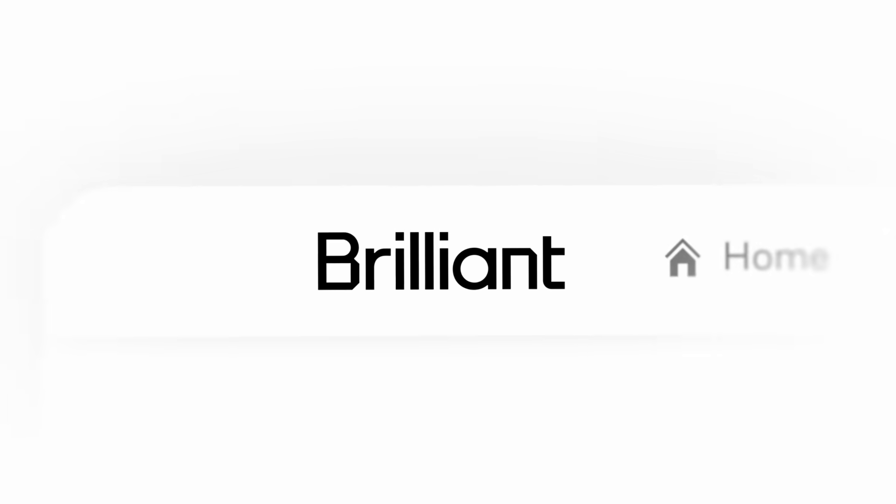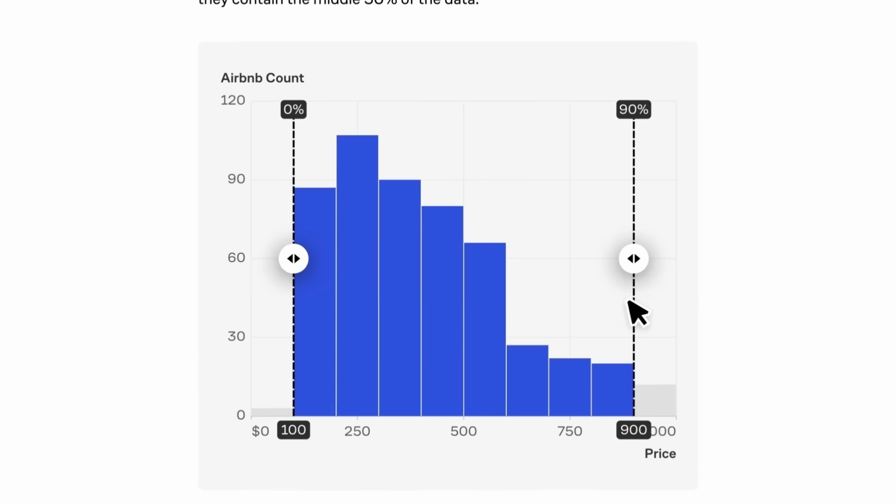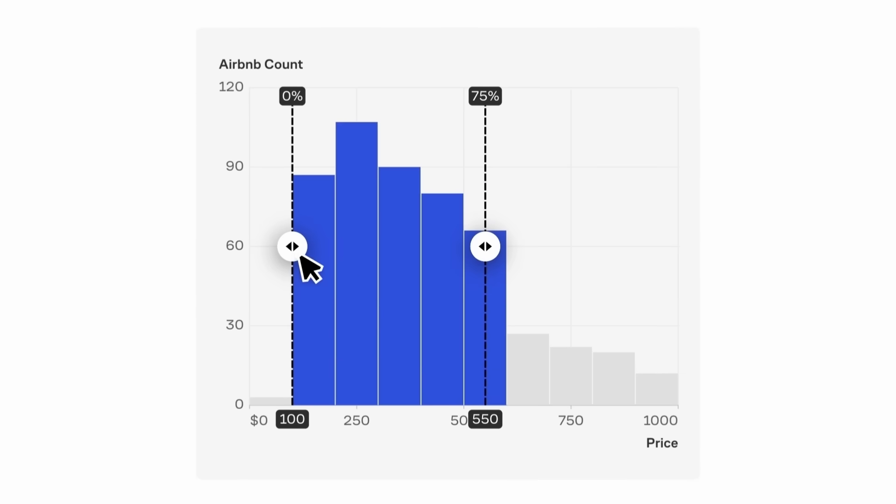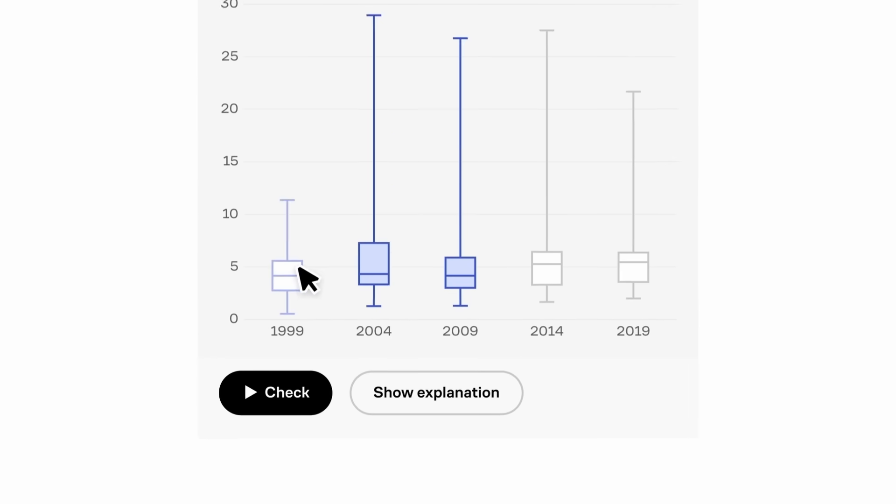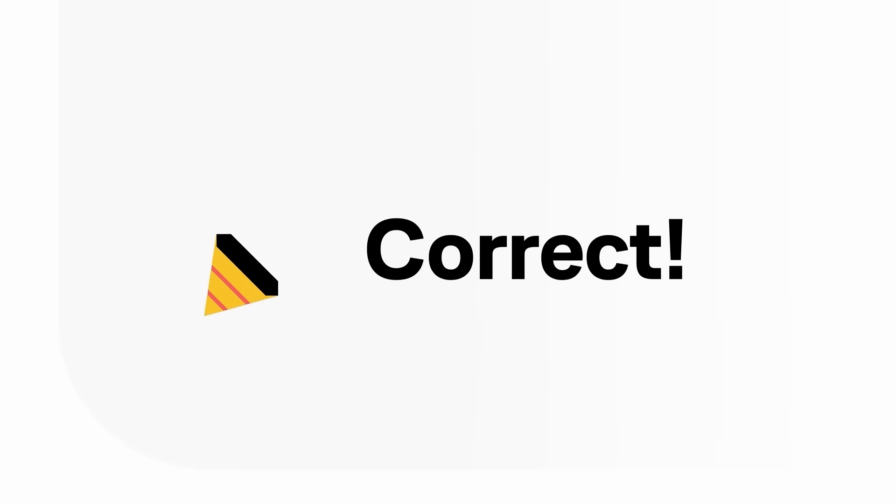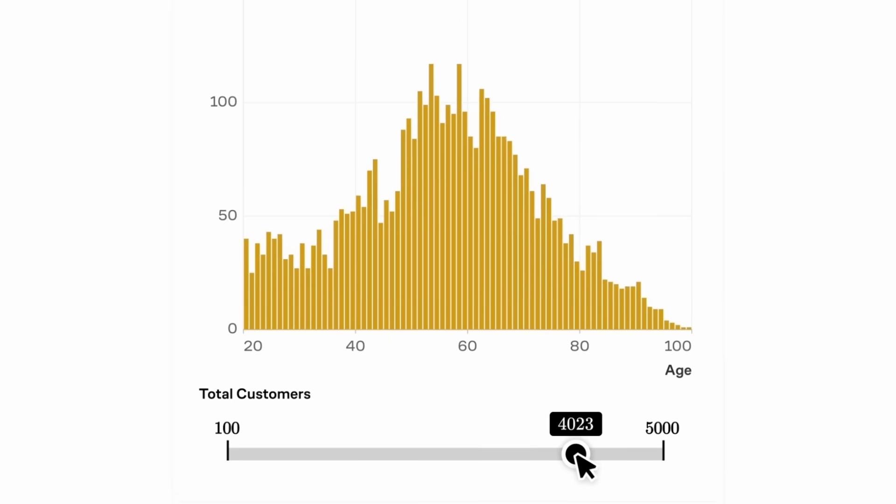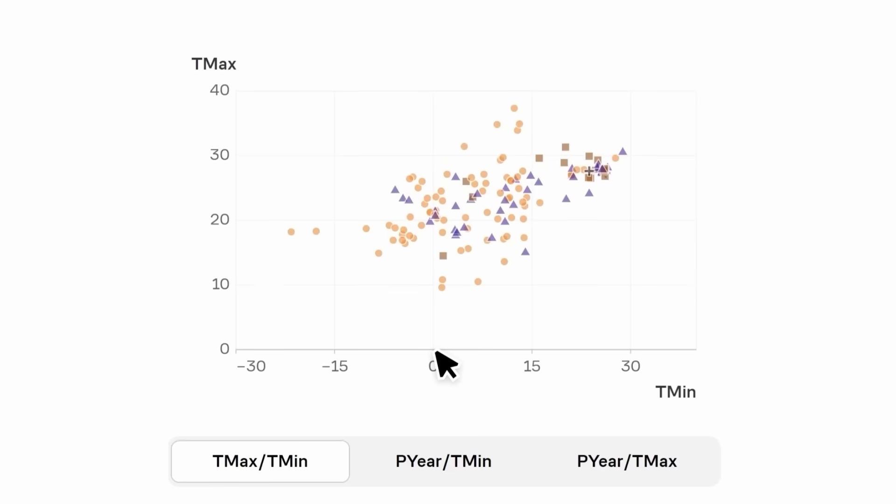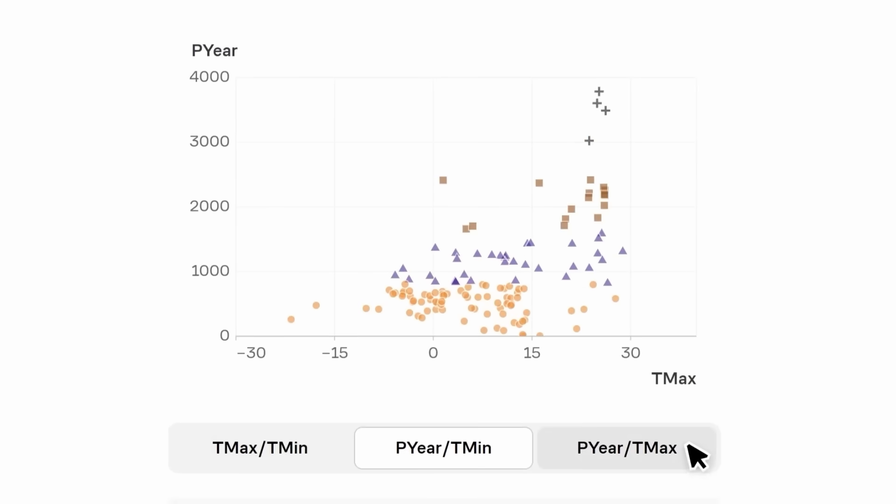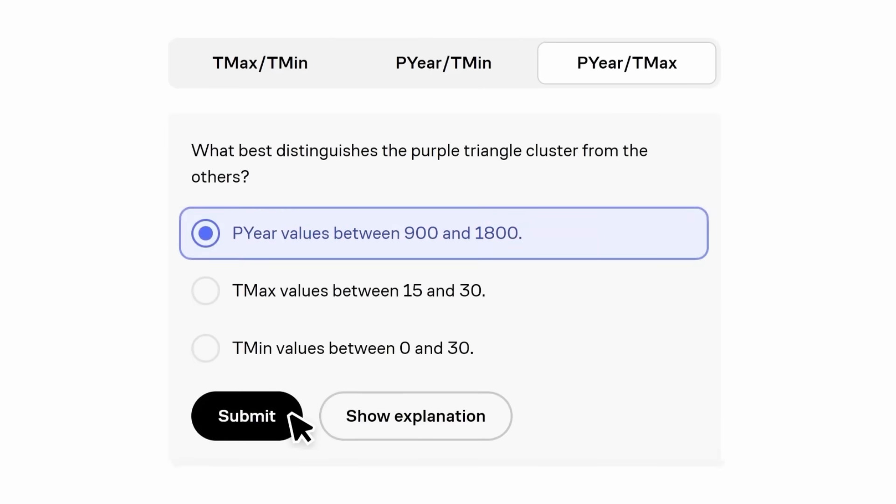This is the age of big data. It's never been more important to understand how to properly read graphs and how data analysis really works. And you know what? Brilliant just put out a set of new courses on data science that help you to learn exactly that. All courses on Brilliant have interactive visualizations and come with follow-up questions. What you see here is from their data science courses which they just released.